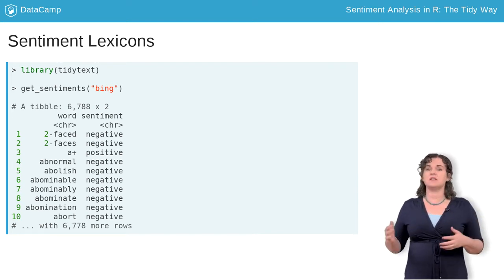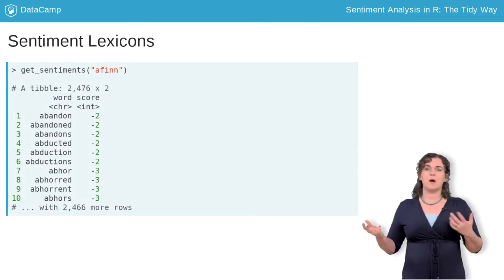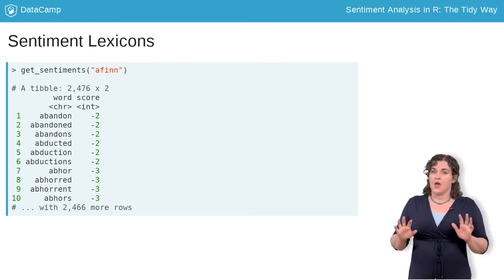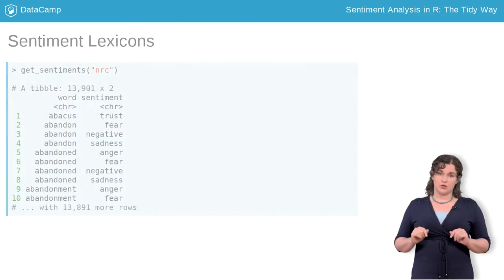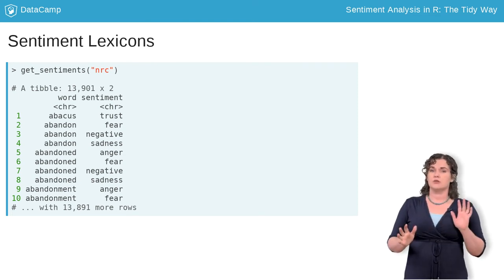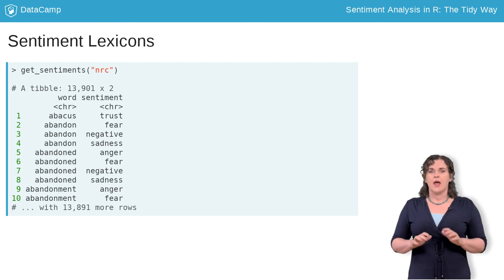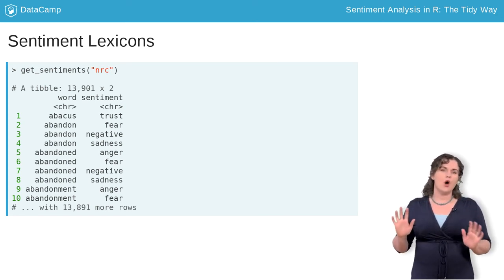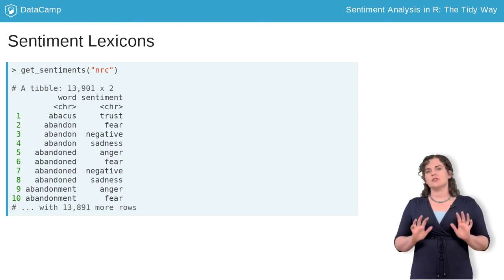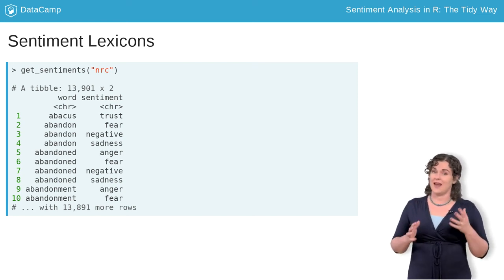Or they might be scored like this lexicon with a numerical score that runs from negative to positive to indicate how negative or positive the word is. There are three lexicons that we will explore during this course, and the last one shown here categorizes words into specific emotions as well as positive and negative. Lexicons like these don't contain all English words because many words are pretty neutral. The choice about which lexicon to use in analysis often depends on what question you're trying to answer.